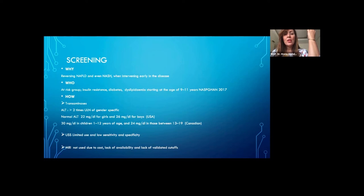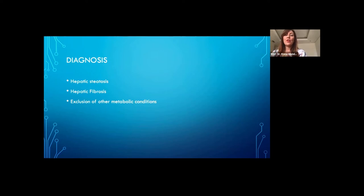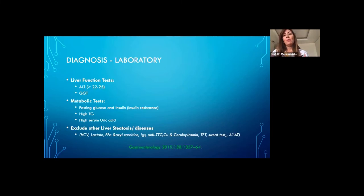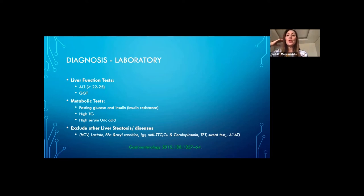We could use ultrasound for screening, but its sensitivity and specificity are low. MRI to detect liver steatosis is accurate but not practical in children — it is expensive and not available in all centers. To diagnose NAFLD, we must establish the presence of hepatic steatosis, assess for hepatic fibrosis, and more importantly exclude any other liver disease. Elevated GGT represents a risk factor for developing fibrosis.